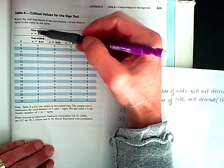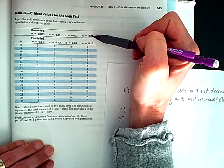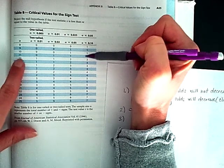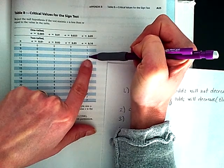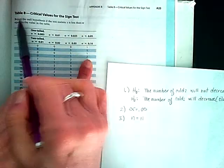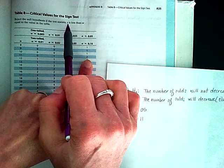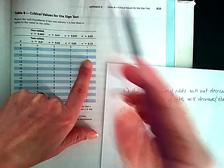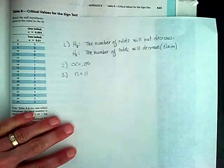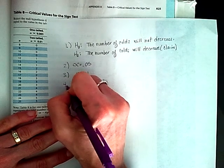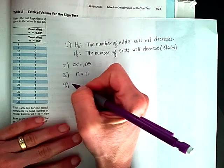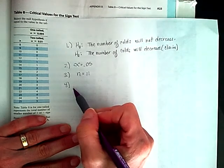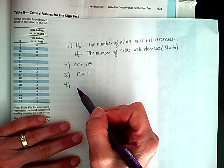I'm looking at a one-tailed test at a sample size of 11, so that's going to find that I am going to reject the null hypothesis if the test statistic is less than or equal to 2. Now if you remember, we already found what our test statistic was, so you're going to see that we're already going to reject.